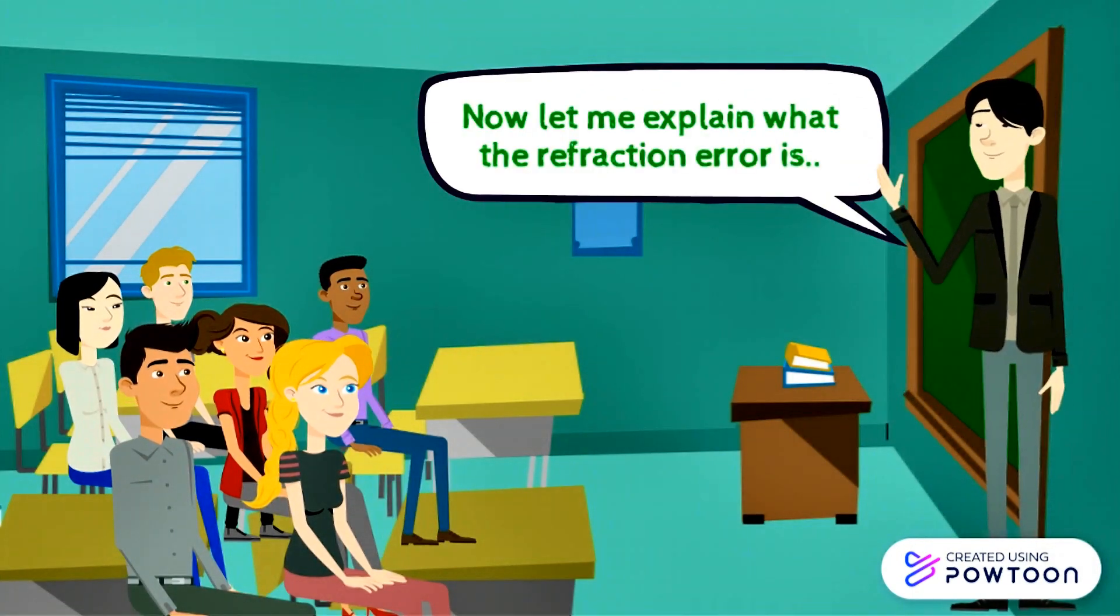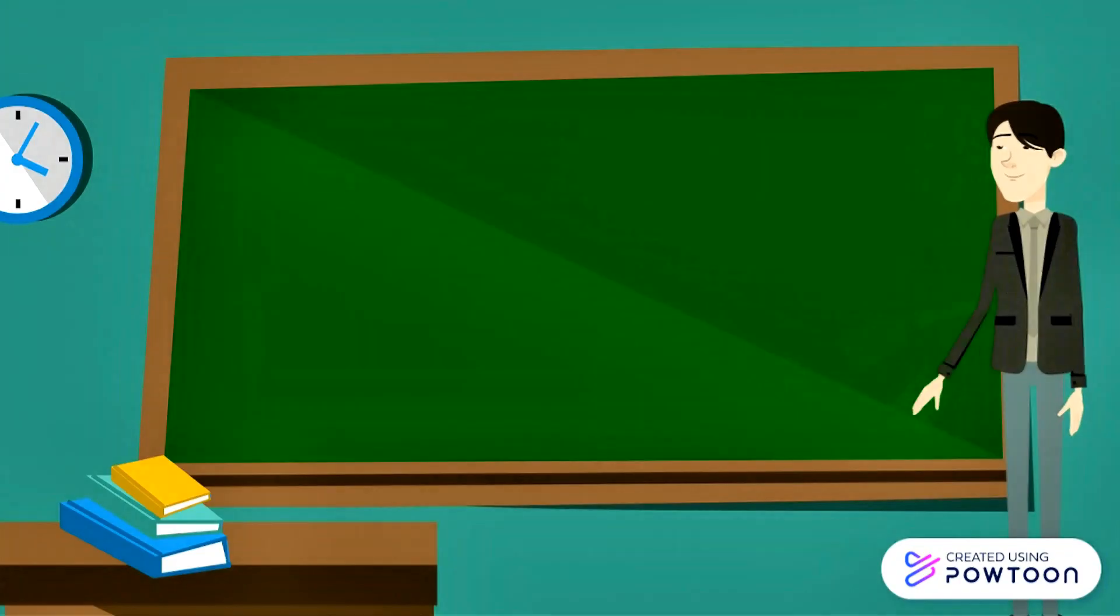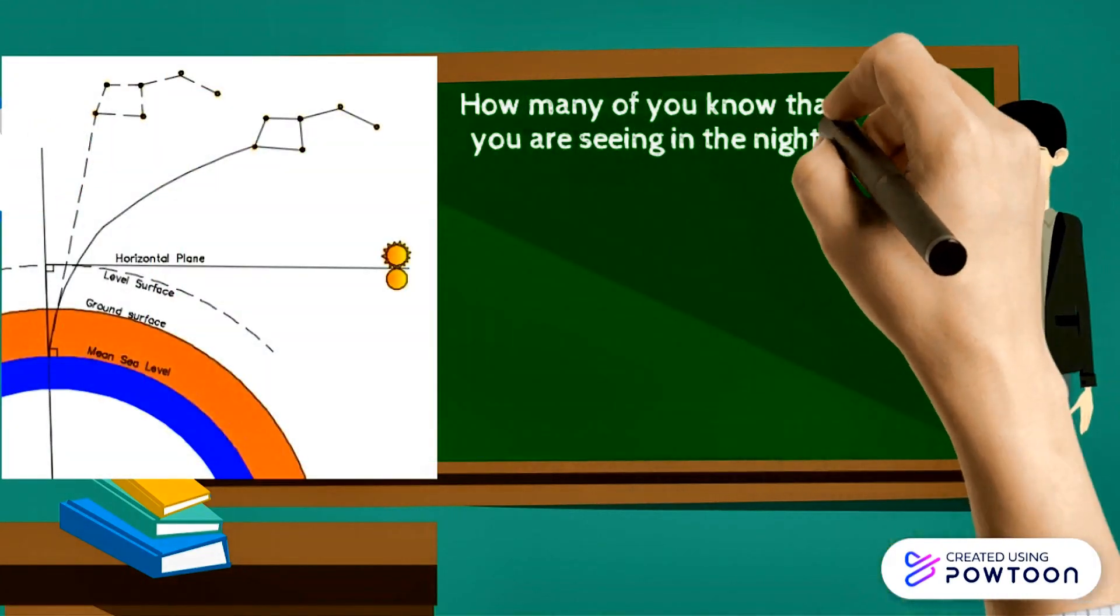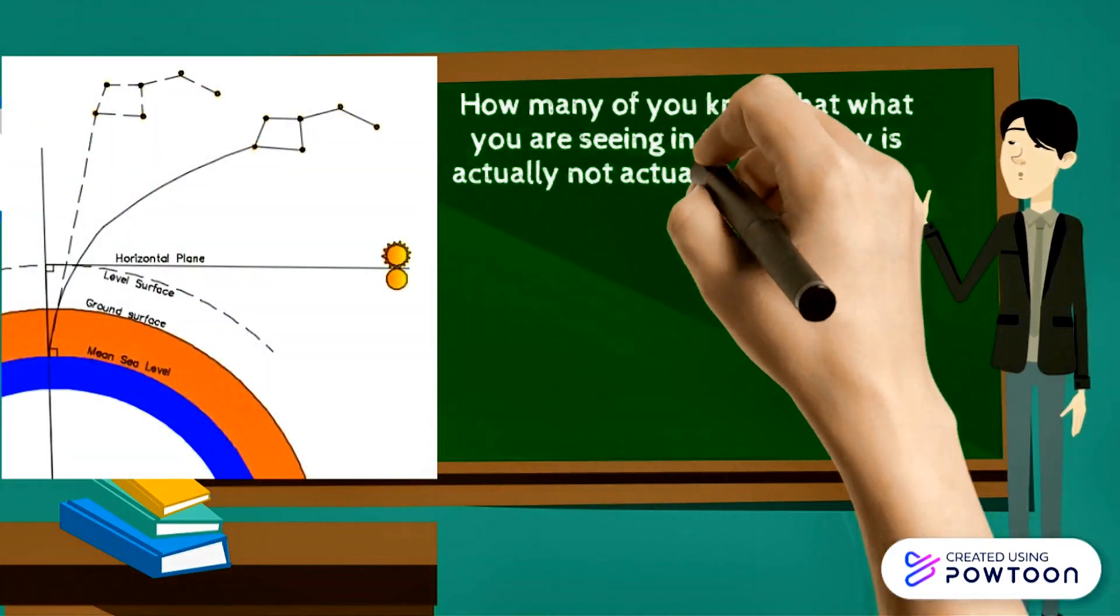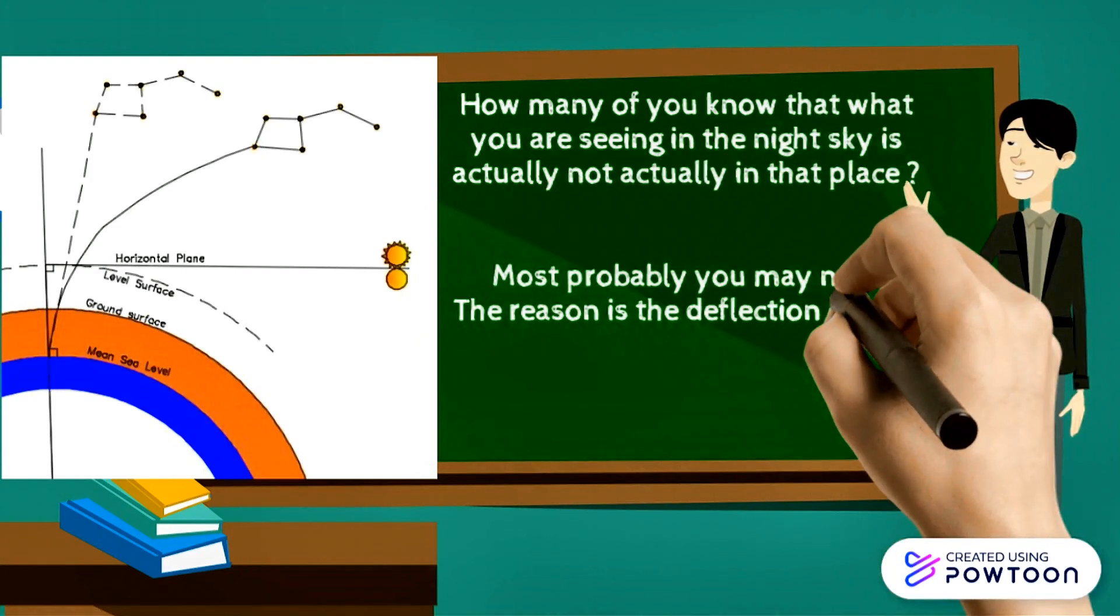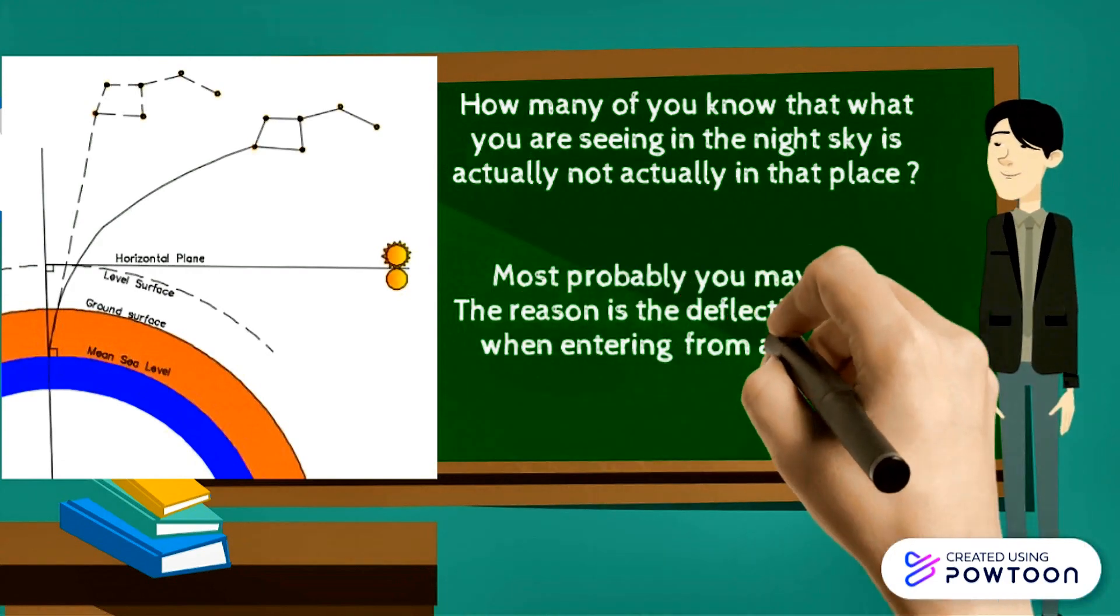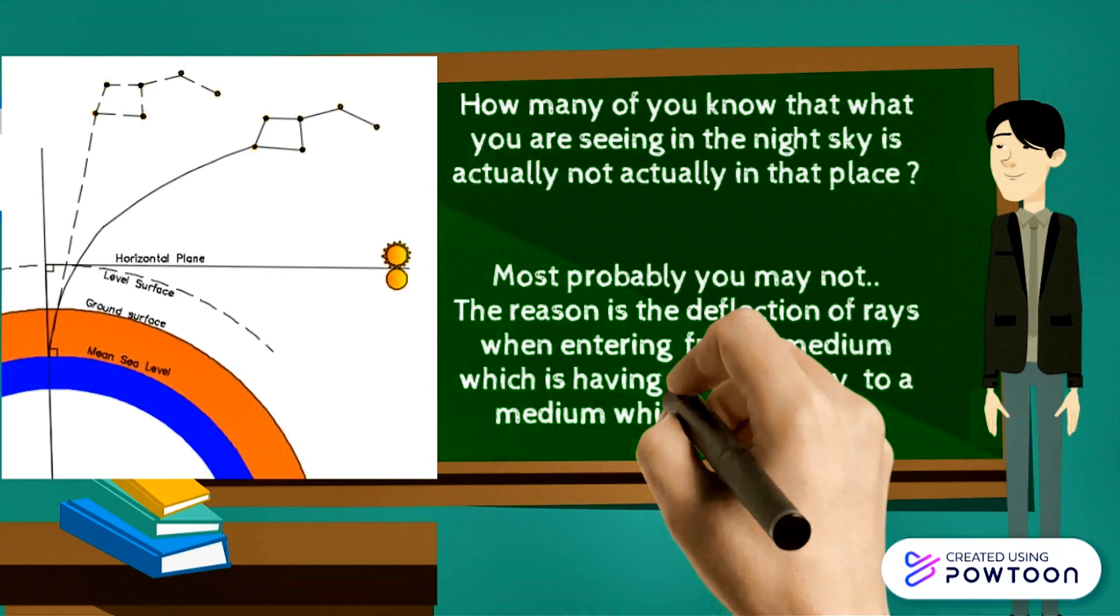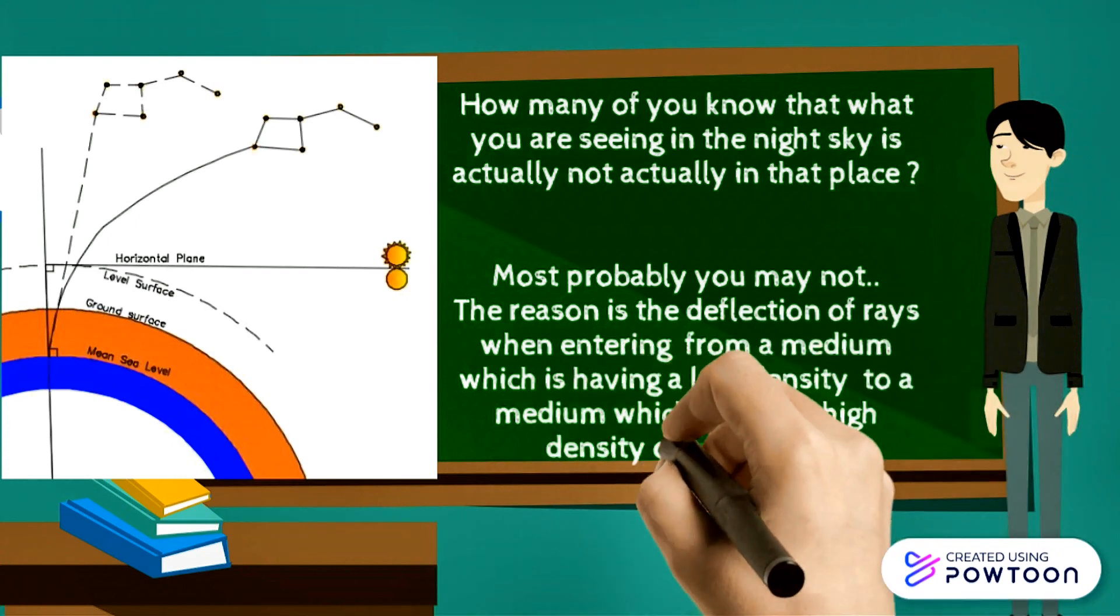Now let me explain what the refraction error is. How many of you know that what you are seeing in the night sky is actually not in that place. Most probably you may not. The reason is the deflection of rays when entering from medium which is having a less density to a medium which is having a high density or vice versa.